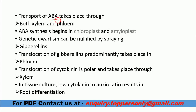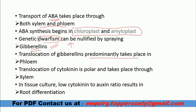Abscisic acid transport occurs through both xylem and phloem. Abscisic acid synthesis starts in chloroplast and amyloplast. Genetic dwarfism can be nullified by spraying gibberellins — their main work is to increase length. Translocation of gibberellins predominantly takes place in phloem. Translocation of cytokinin is polar and takes place through xylem. So cytokinin goes through xylem, gibberellins through phloem, and abscisic acid through both.